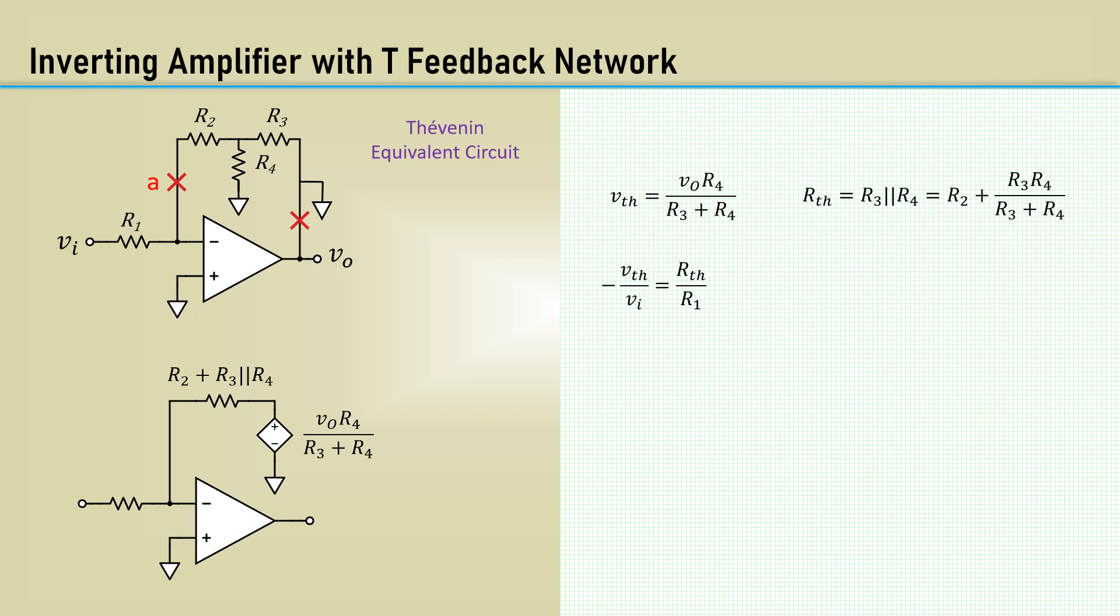The gain relative to the Thevenin voltage follows the inverting op-amp formula, RFeedback, which in this case is R-Thevenin, over the input resistor R1. Substituting the V-Thevenin and R-Thevenin equations from above, here, and finally, rearranging to solve for the gain expression, Vout over Vn.